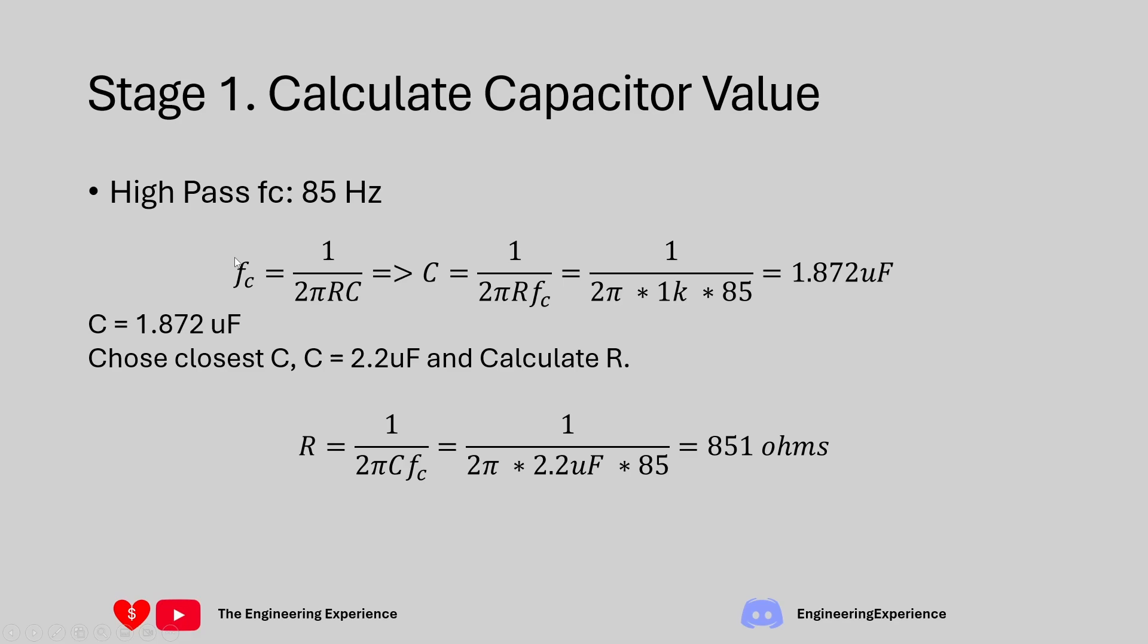We are rearranging this equation and setting the capacitance as 2.2 µF. R is now equal to 1 over 2π × 2.2 µF × 85 Hz, which gives us a resistive value of 851 Ω. We need to find the closest value for the 851 Ω resistor, so choosing the closest possible values we get R of 845 Ω and C of 2.2 µF.